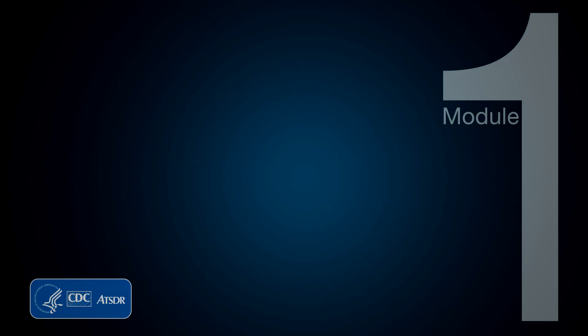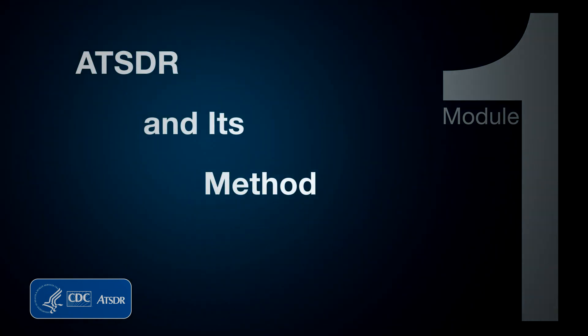Hello, my name is Sylvia Allen-Lewis, and I am a Health Education Specialist in ATSDR, the Agency for Toxic Substances and Disease Registry, based in Atlanta, Georgia. Welcome to Module 1, ATSDR and its Method. This is the first module in an eight-module series explaining how to conduct the public health assessment process, also known as the PHA. The PHA is ATSDR's method for evaluating whether people have been harmed from exposures to environmental contaminants at hazardous waste sites.